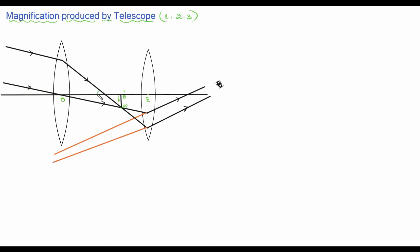This angle and this angle are called alpha — the angle subtended by the object. And this angle is represented as beta — the angle subtended by the image. As we know, angular magnification is given by beta/alpha, which means the angle subtended by the image divided by the angle subtended by the object. The final expression for magnification is M = β/α = FO/FE, where FO is the focal length of the objective lens and FE is the focal length of the eyepiece.